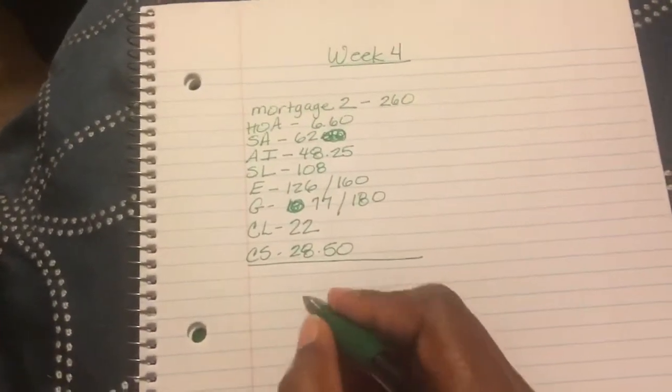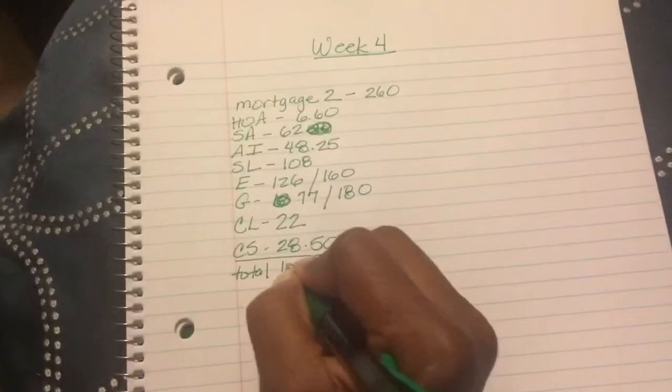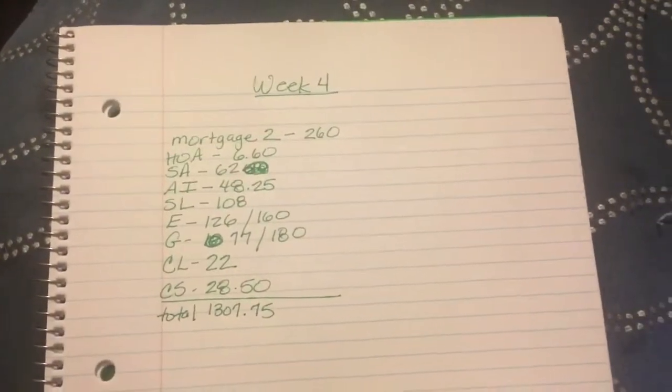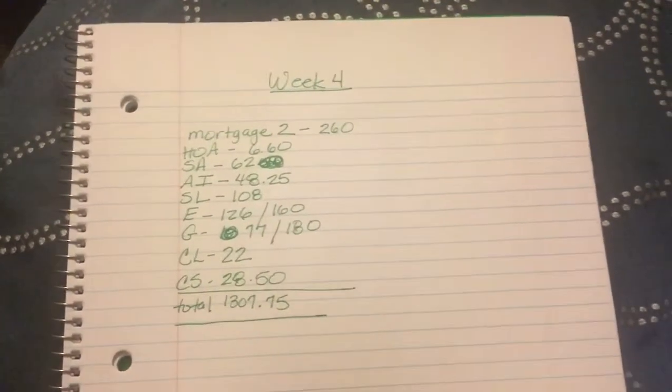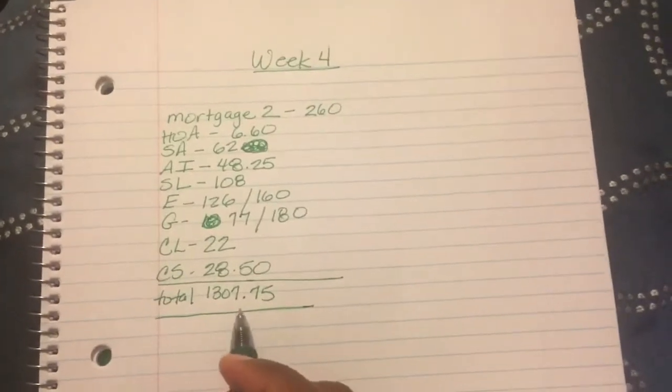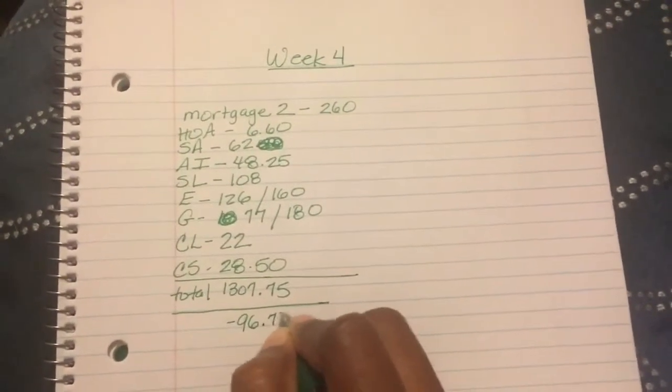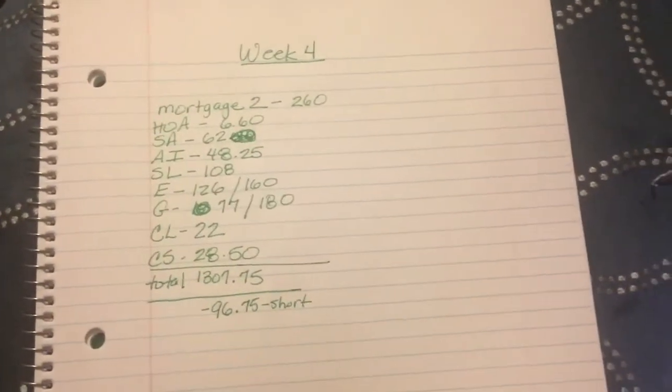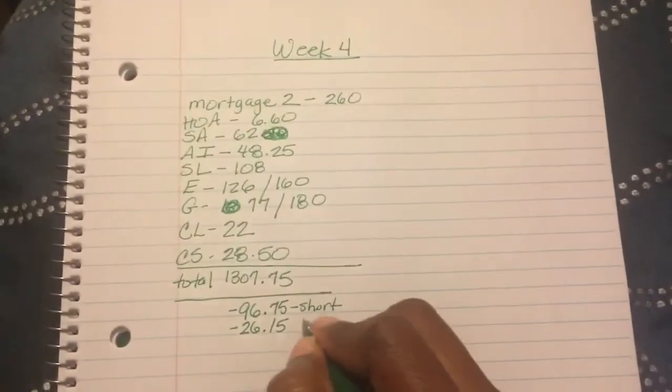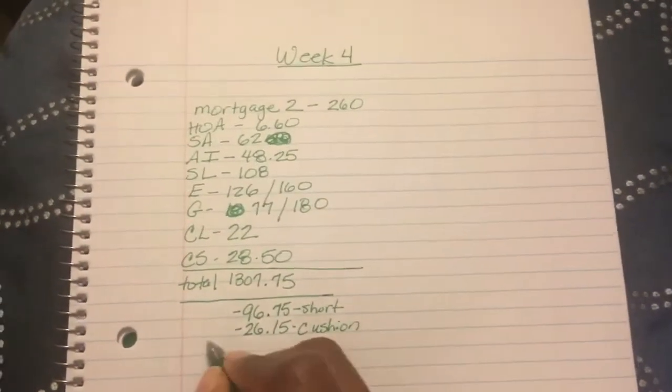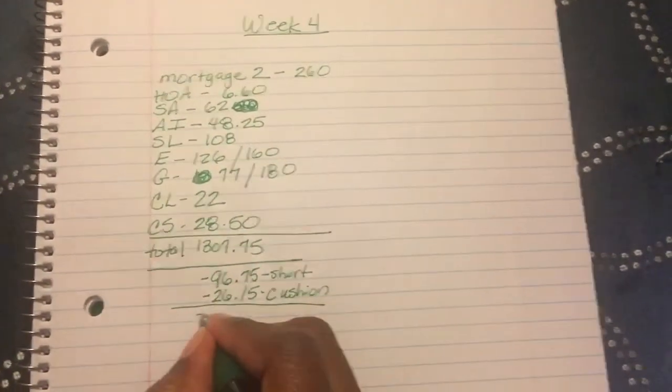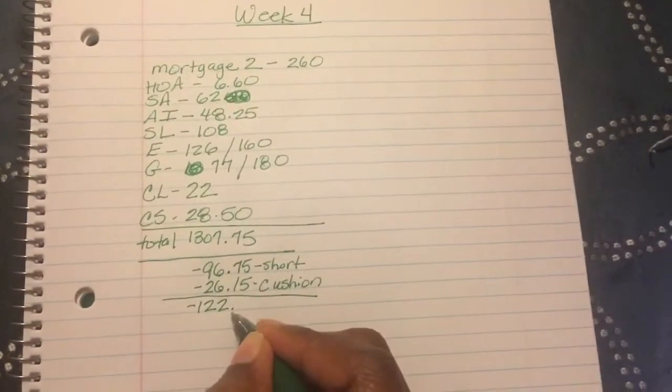Which gives me a total of $1,307.75. Now, from there, based on the amount of money that I put into this account, I am going to be short this week $96.75. Also, remember I like to keep a cushion in the account of $26.15. So in total, if we add the $96.75 with the $26.15, I am going to be short $122.90.